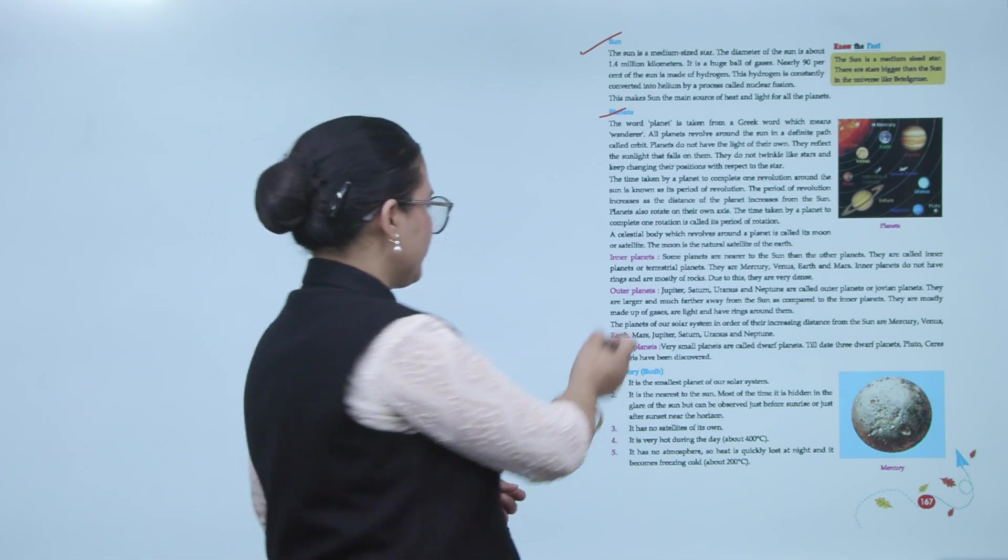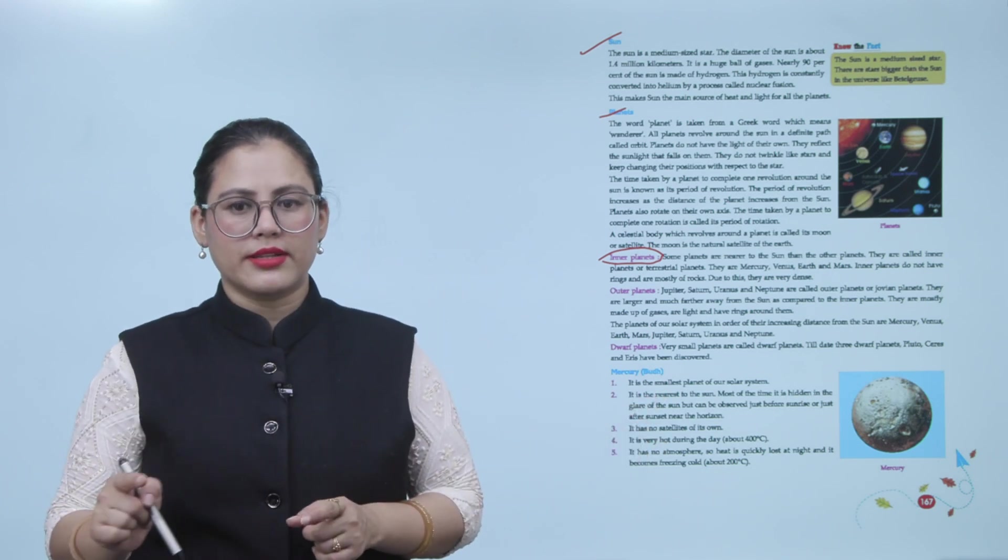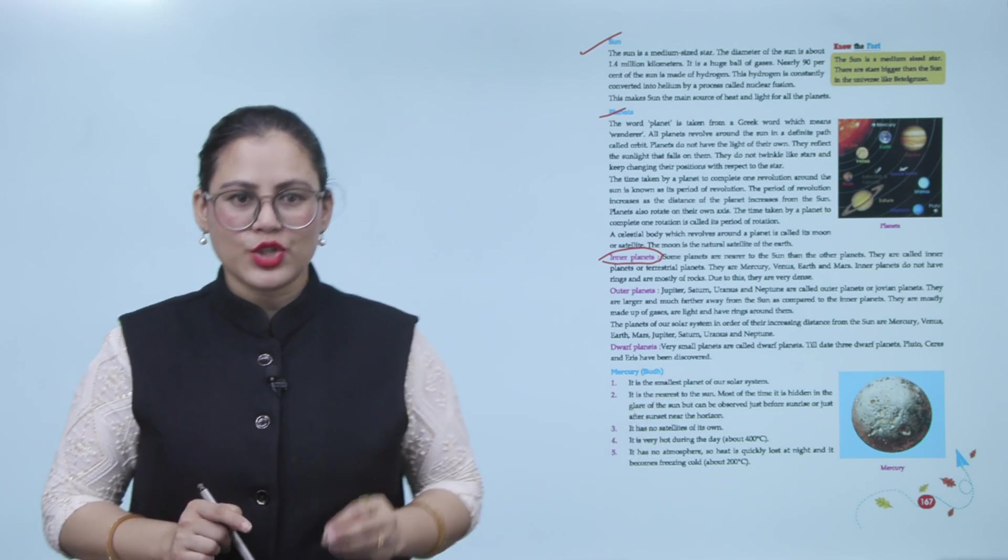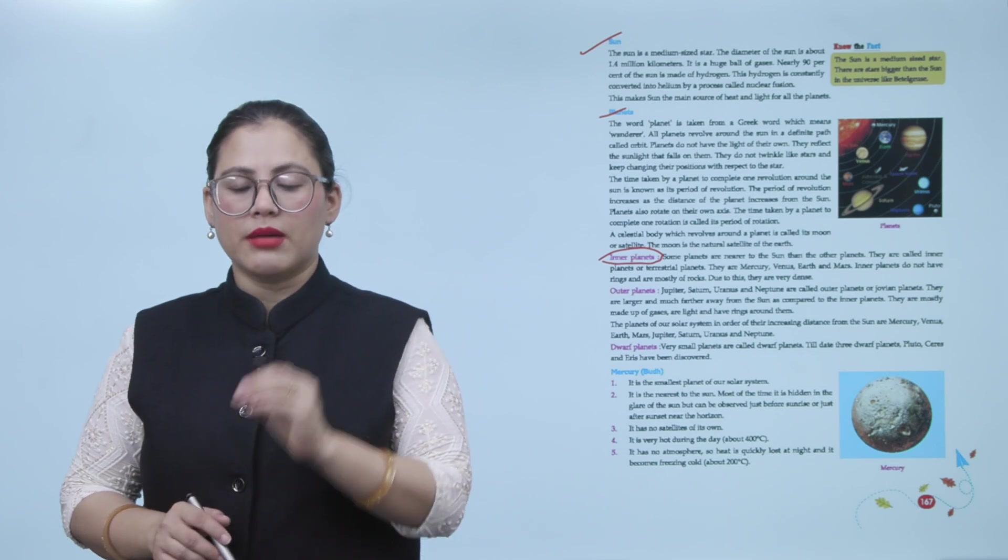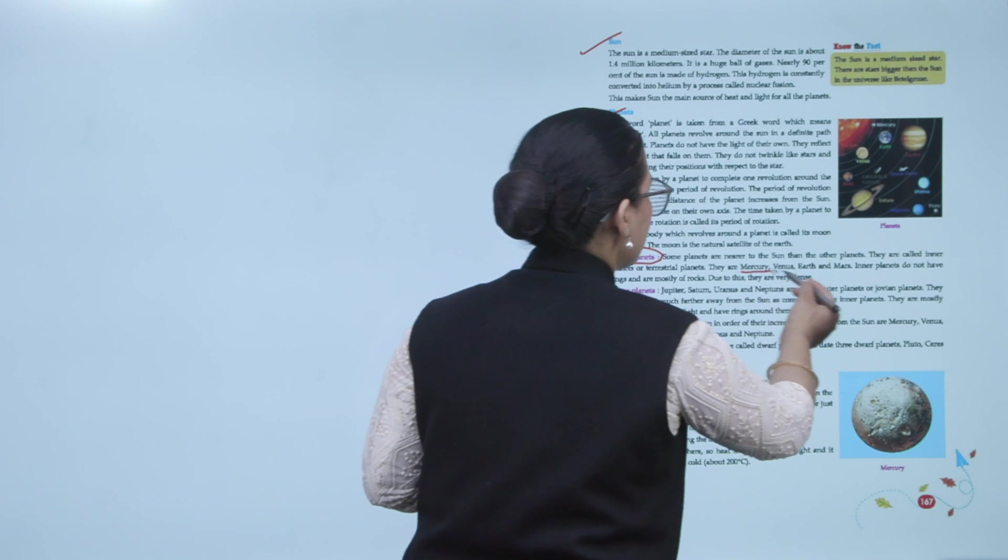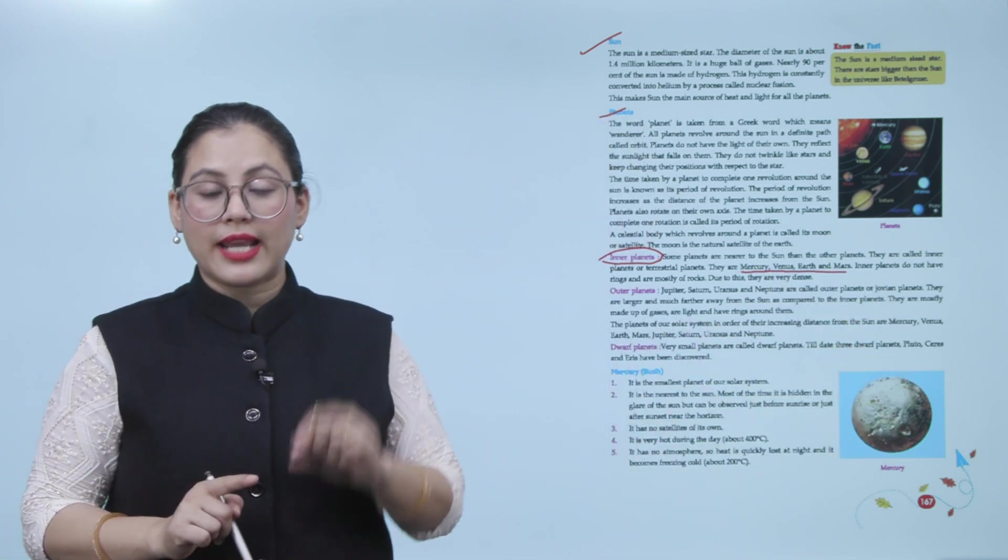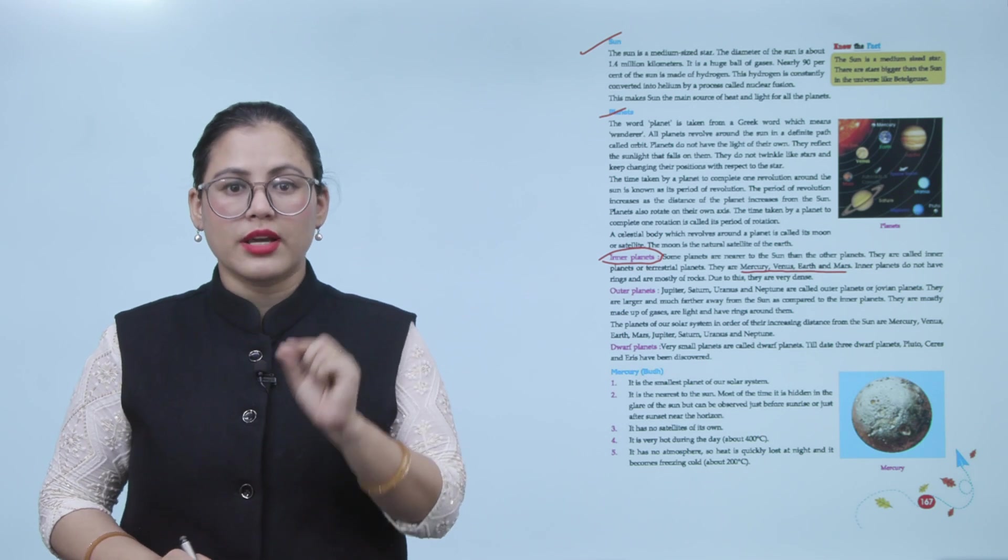Inner planets. Some planets are nearer to the sun than the other planets. They are called inner planets or terrestrial planets. They are Mercury, Venus, Earth, and Mars. Inner planets do not have rings and are mostly made of rocks. Due to this, they are very dense.